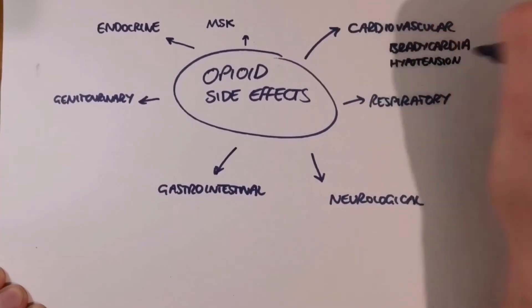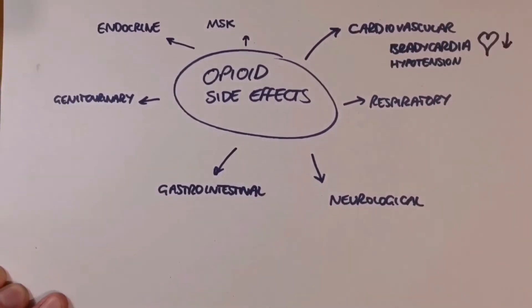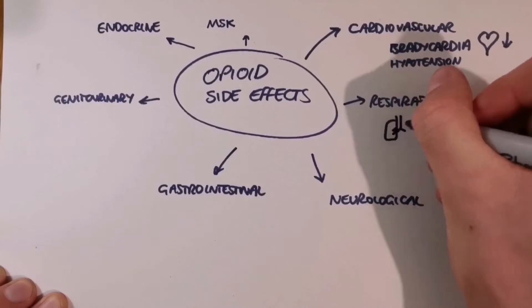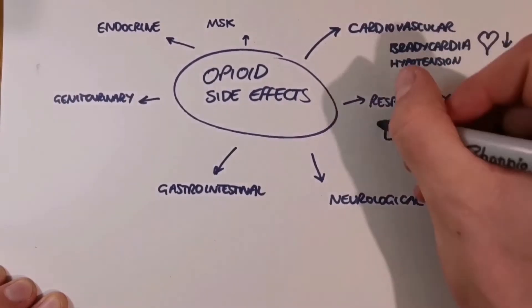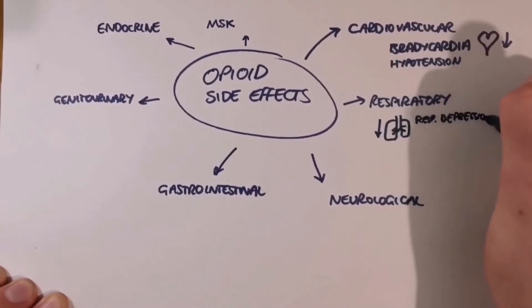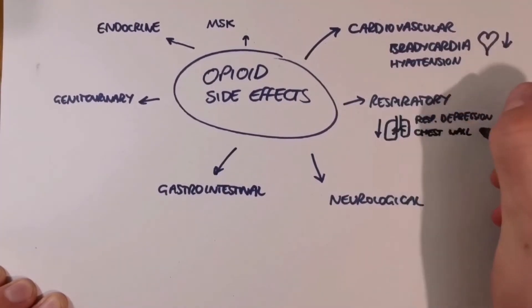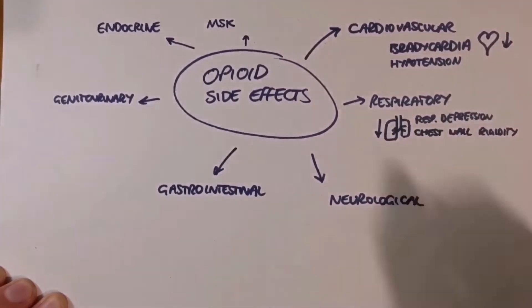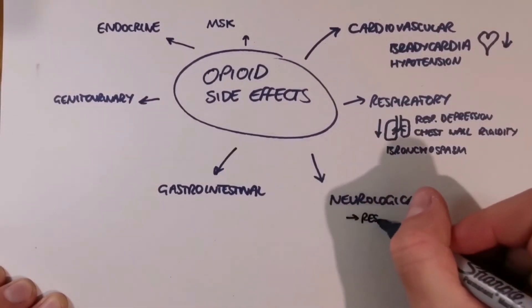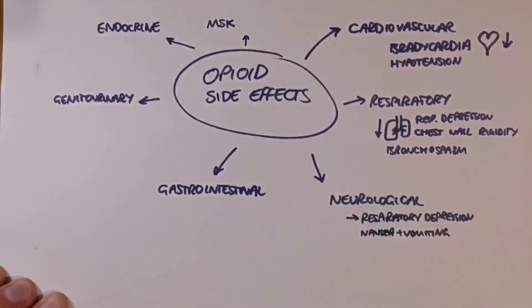Opioids reduce sympathetic drive and directly depress the sinoatrial node, causing bradycardia, and they induce histamine release, causing hypotension. They also reduce your sensitivity to CO2, causing respiratory depression, and can induce a strange stiff chest phenomenon. Histamine release can also induce bronchospasm.